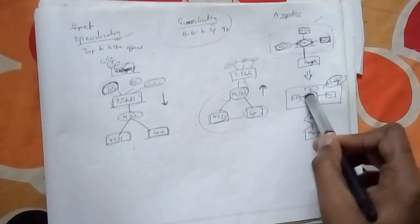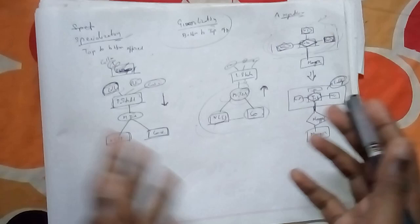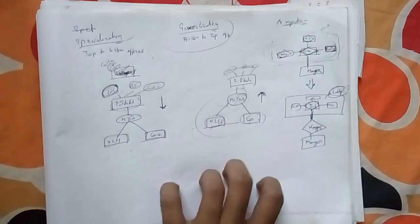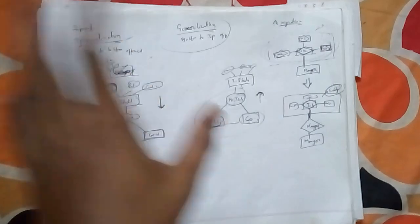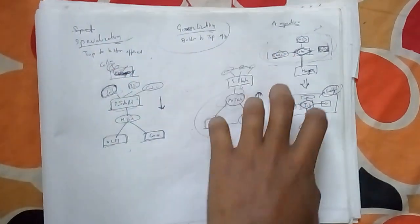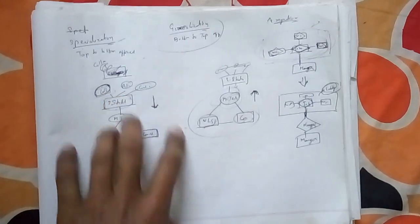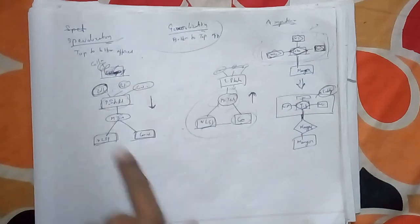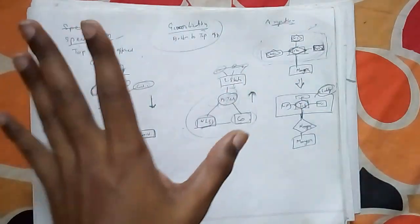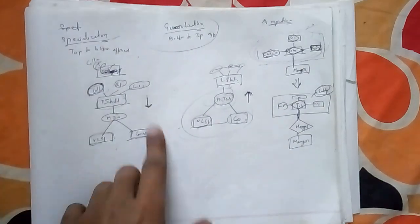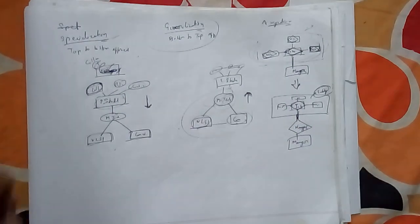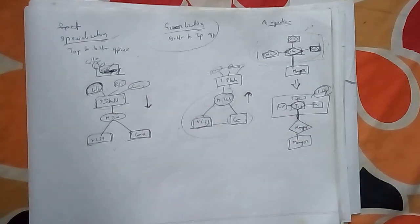These are the main three things in this topic. Specialization, generalization, and aggregation — hope you guys understood. You can write down definitions from what I said. The important part is these diagrams. Just remember: specialization is top-to-bottom, generalization is bottom-to-top, and then there's aggregation. See you guys in the next video.